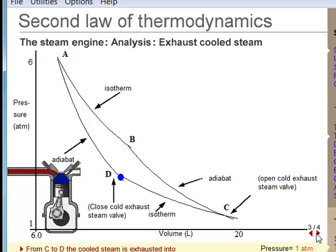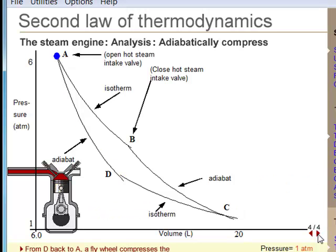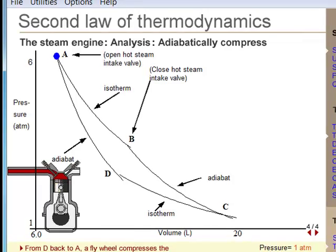At the point of greatest expansion, the piston starts back up. The exhaust valve opens and the cooled steam is exhausted to the atmosphere. This is an isothermal compression. It is easier to compress a cool gas than a hot gas. Finally, the exhaust valve closes and the piston carries on to complete the cycle by compressing the gas. As it compresses the gas, it heats it back up to the starting temperature. This is an adiabatic compression.